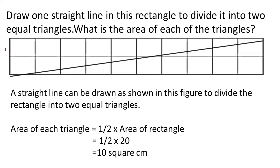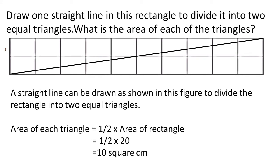A straight line can be drawn to divide the rectangle into two equal triangles. Area of each triangle is equal to half into area of rectangle. Area of rectangle we already know — 20 square centimeter. So, half into 20 square centimeter — half of 20 is 10 square centimeter. You again draw this carefully in your notebook.